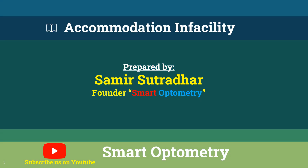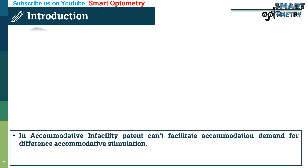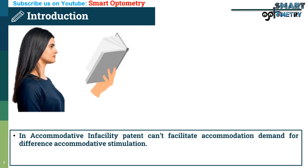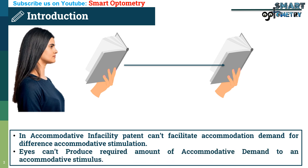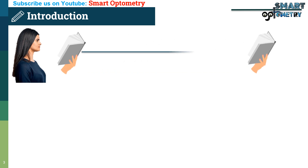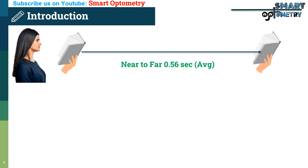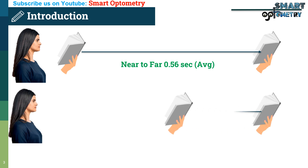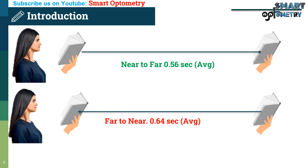Today I will discuss accommodative infacility. In accommodative infacility, the patient can't facilitate accommodation demand for different accommodative stimulation. The patient experiences difficulty changing the accommodative response level, like changing accommodation from near to distance or from distance to near. The eyes can't produce the required amount of accommodative demand. Normally, from near to far we need 0.56 seconds, and from distance to near we need 0.64 seconds to respond to an accommodative stimulus. In accommodative infacility, it requires more time to respond than required.